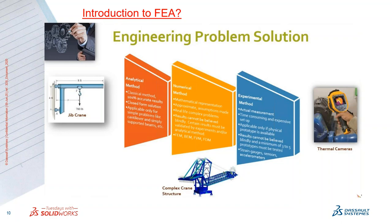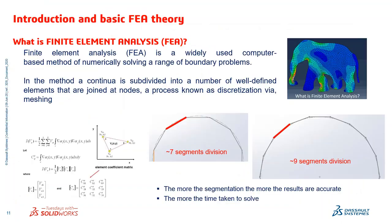The last method used in industry is physical testing — using strain gauges, sensors, and thermal gauges to physically check the product, sometimes including destructive tests. With simulation we use the numerical method. Simulation is a solution to reduce your prototyping — it is not going to replace physical experiments, but it brings you closer to your physical prototyping results.